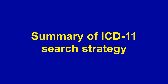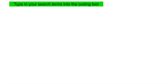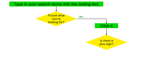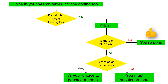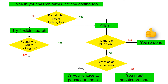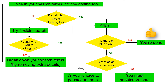Here's a summary of the ICD-11 search strategy. Start by typing the full diagnosis into the coding tool — ICD-11 can sometimes create the cluster for you automatically. If you find what you're looking for, click it, then check for the plus sign. If there's no plus, you're done. If it's red, you must post-coordinate; if it's gray, post-coordination is optional. If you don't find what you're looking for, try flexible search. If that doesn't work, break down your search terms by removing extra detail. Quick note: when ICD-11 finds a cluster automatically, you may not need to click the red plus, as ICD-11 may have already selected the post-coordination for you.